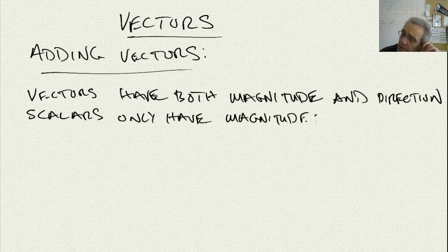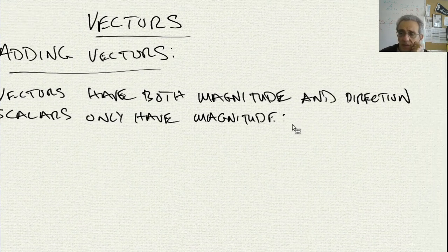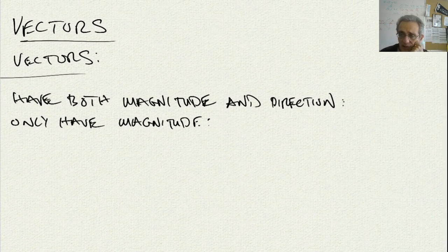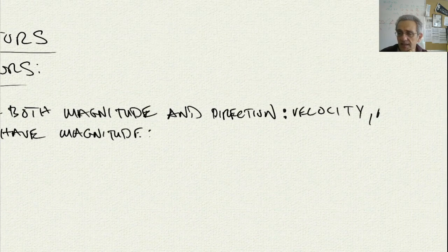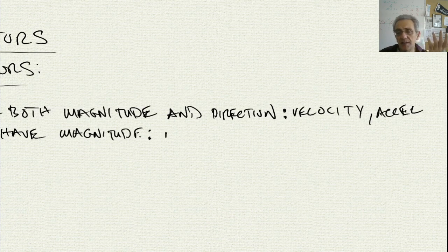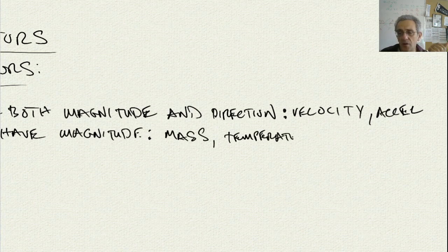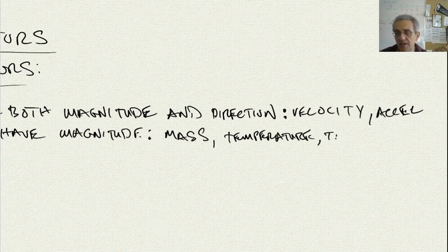So what would be examples of this? An example of a vector would be, for example, velocity, or even acceleration. For a scalar example, it would be something like mass, or even temperature. Also, even time is a scalar.